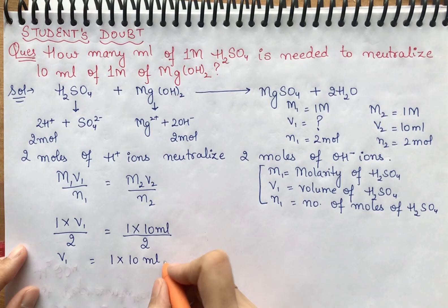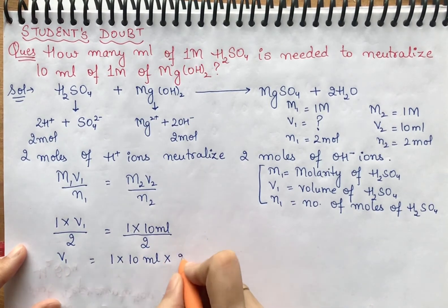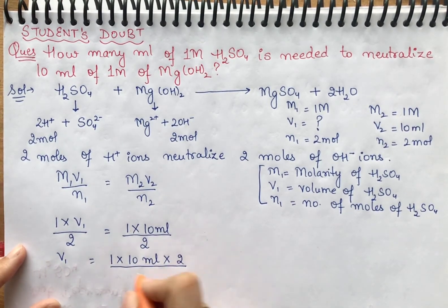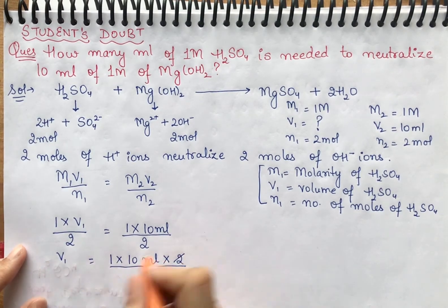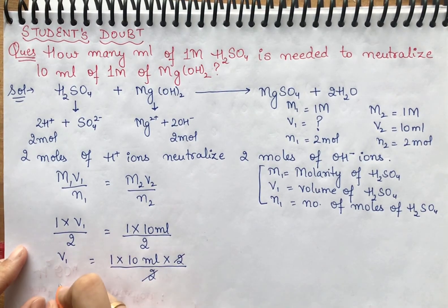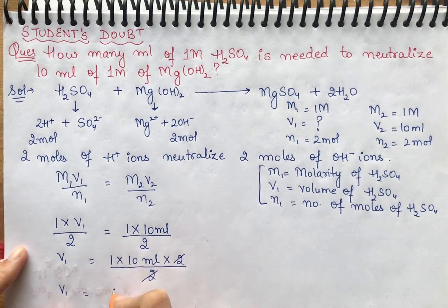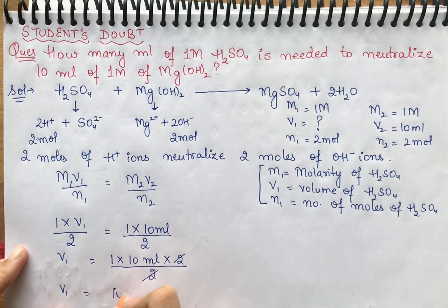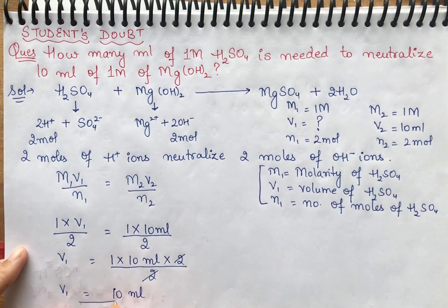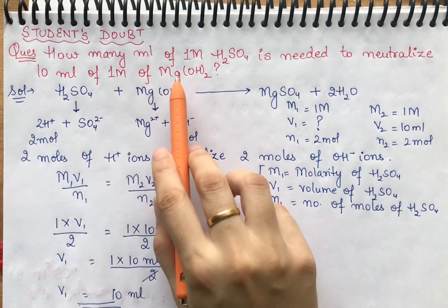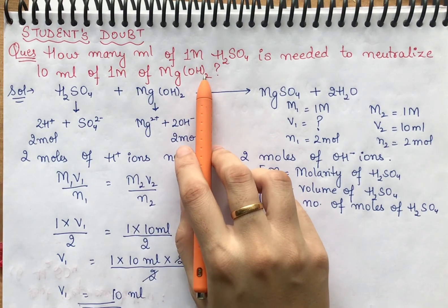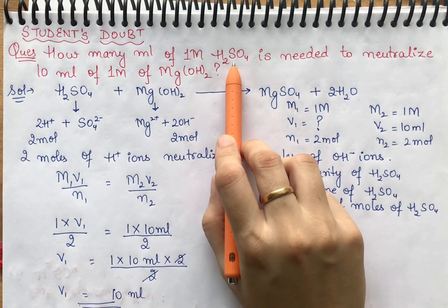times 2 over 2. The 2s cancel, molarity cancels. V1 equals 10 ml. So 10 ml of Mg(OH)2 solution will neutralize with 10 ml of H2SO4 required.